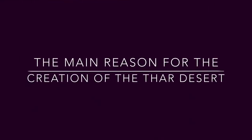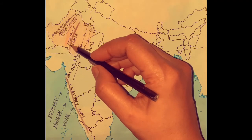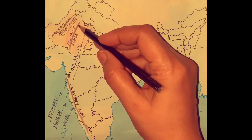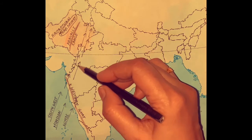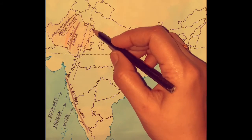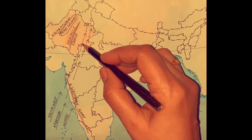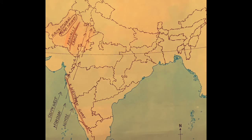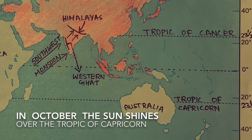This can be seen in the creation of the Thar Desert in Rajasthan. One of the main reasons for the creation of the Thar Desert is the fact that the Aravalli range runs parallel to the direction of the southwest monsoon winds. Thus, the range is unable to block the winds and cause rainfall.